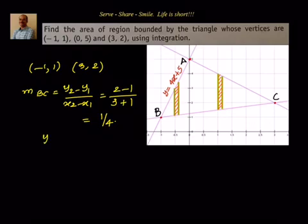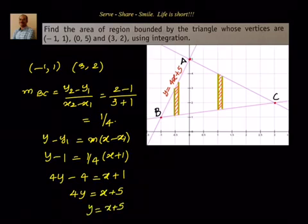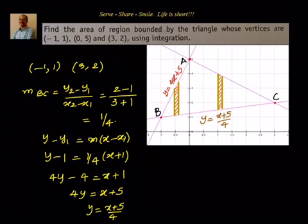Using point-slope form: y - 1 = (1/4)(x + 1), so 4y - 4 = x + 1, giving 4y = x + 5, or y = (x + 5)/4. That is the equation of BC.